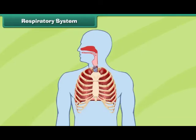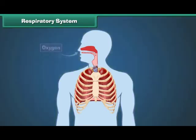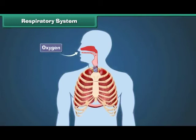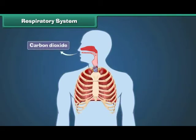Respiratory system. The human respiratory system is made up of the nose, windpipe and lungs. It helps in taking oxygen from the air and removing carbon dioxide from the human body. The oxygen mixes with food to give us energy.